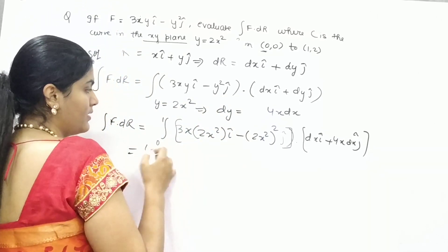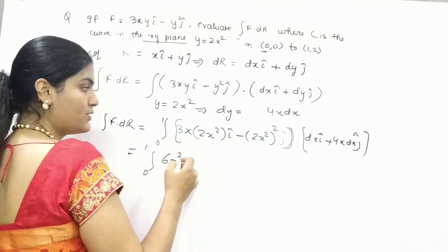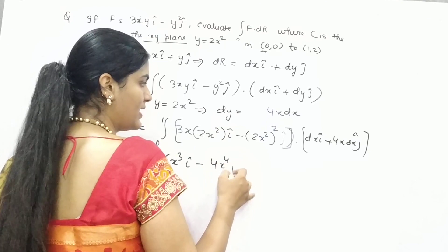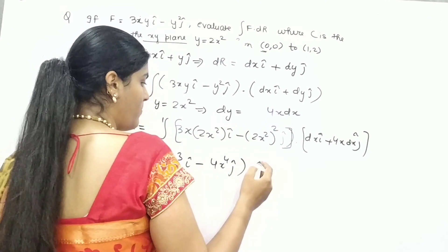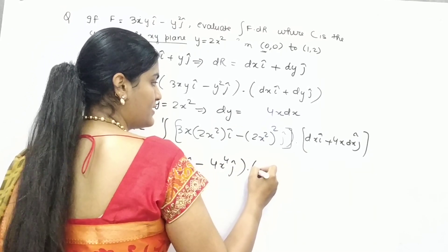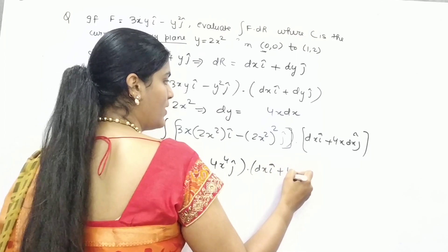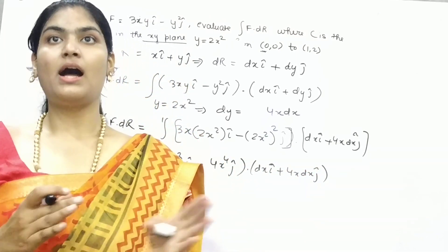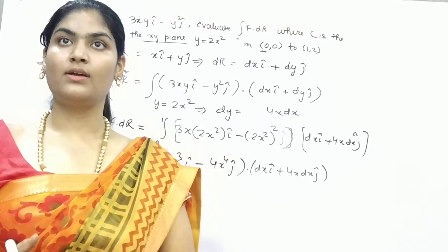3 times 2 is 6x cube i minus 2 times 2 is 4x to the 4 j dx i 4x dx j. Now i dot i is 1, j dot j is 1.